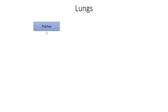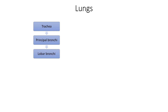Lungs are a pair of essential organs of respiration located in the thoracic cavity. The trachea divides into two right and left principal bronchi, and each principal bronchus in turn divides into lobar bronchi — usually three on the right side and two on the left. The lobar bronchi divide into segmental bronchi, which are most of the time 10 in number on the right side and 8 to 10 on the left side.